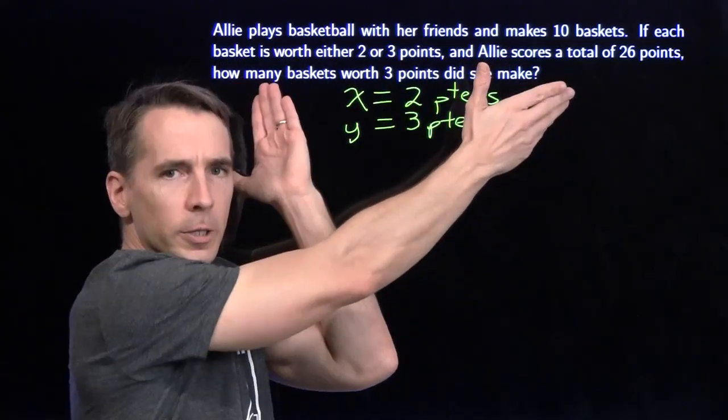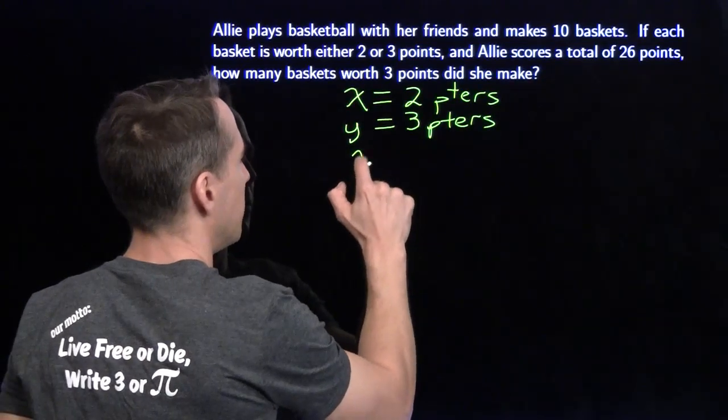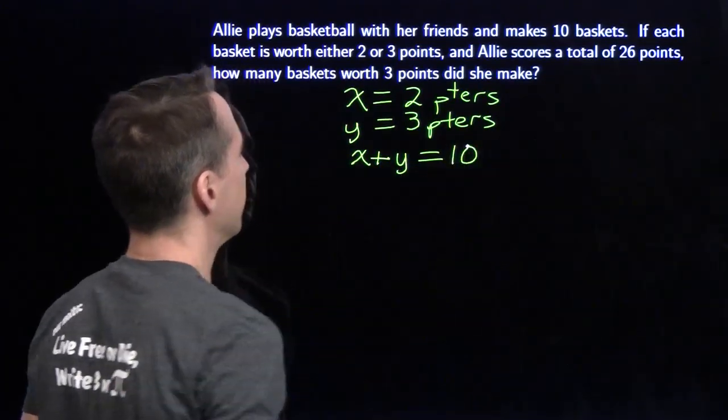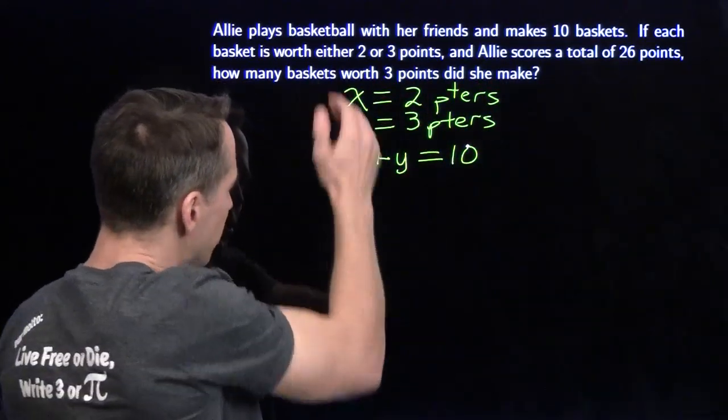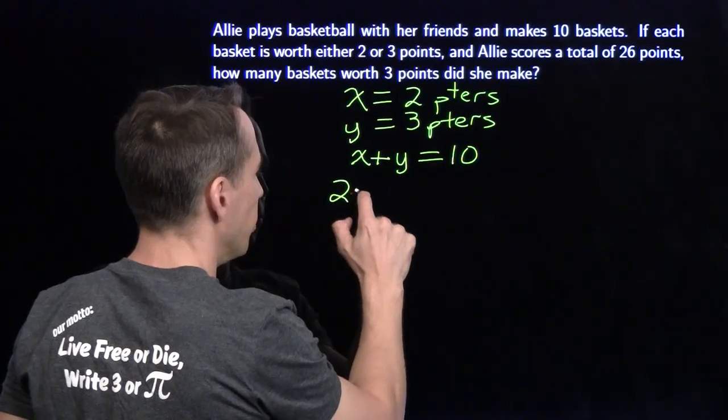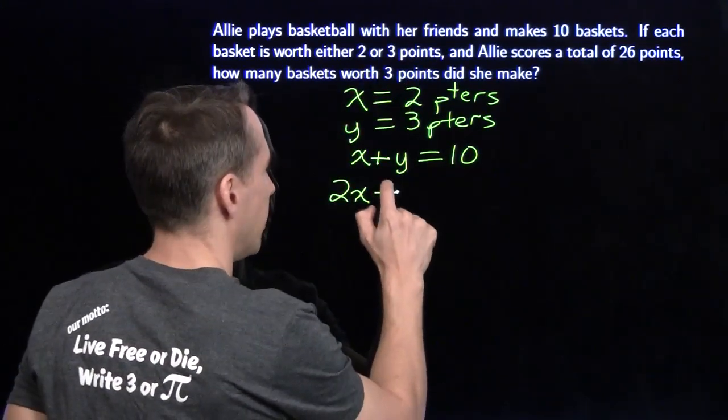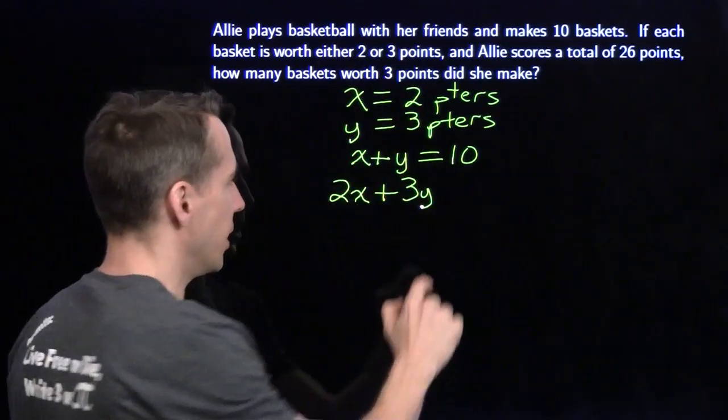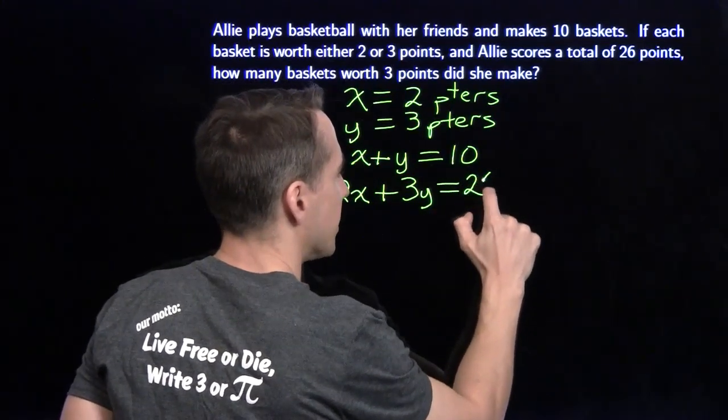Let's turn these words into equations. She makes 10 baskets, that means x plus y is 10. And she has a total of 26 points. Each of these 2 pointers is worth 2 points, so she gets 2x points for the x 2 pointers, and 3y points for the y 3 pointers she hits. So we have 2x plus 3y equals 26.